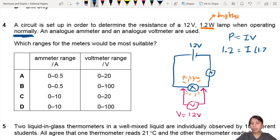So 1.2 divided by 12 is 0.1. Sounds about right for current.